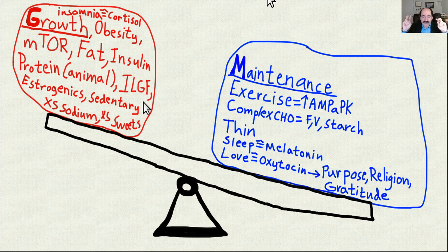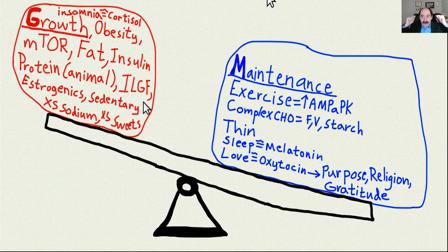mTOR is a nutrient sensing pathway. When there's tons of protein and fat available, it tells the cell to grow and divide. So you want to slow down mTOR.